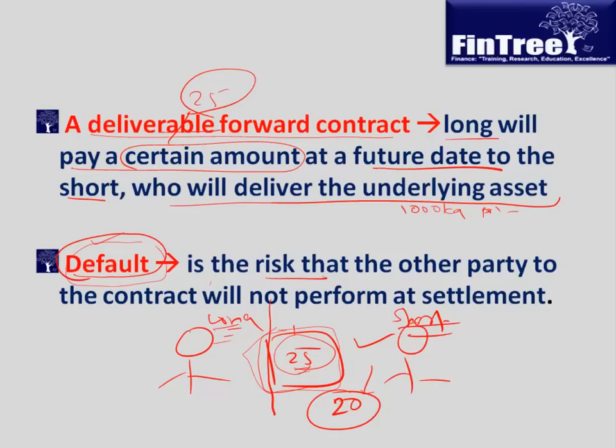Default risk is the risk that the other party to the contract will not perform at settlement.